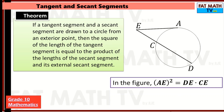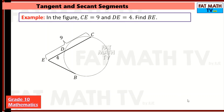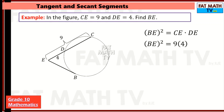In the figure, CE is 9 (the secant segment) and DE is 4 (the external secant segment). Find BE, the tangent segment. BE squared equals CE times DE, so BE squared equals 9 times 4, which is 36. Taking the square root, BE equals 6.